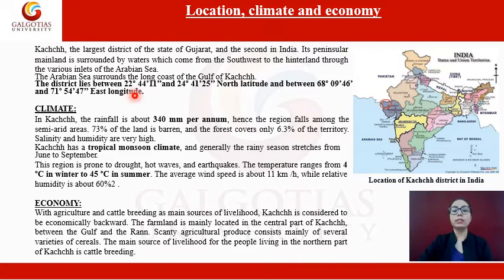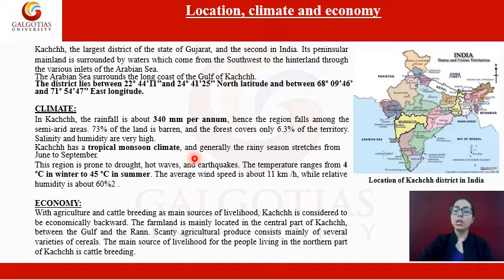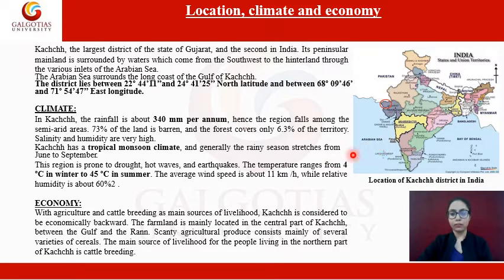If we talk about the climate, rainfall is about 340 mm per annum and the region falls in the semi-arid area. 73% of land here is considered barren and forest covers only about 6.3% of the territory. The humidity and salinity in the soil are very high. Kutch has a tropical monsoon climate and the rainy season stretches from June to September. The region is prone to droughts, hot waves, and earthquakes. Temperature ranges from 4°C in winter to 45°C in summer — a very wide varying range. The average wind speed is about 11 km/h while relative humidity is about 60%.